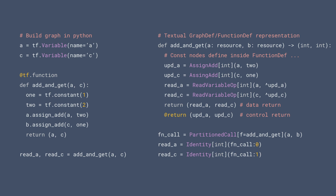The function def — the graph representation — looks something like this on the right. We have a graph def, which is basically a sequence of node defs, and we also have a function def. It's a way to group together a subgraph with input arguments and output arguments. The Python function will be transformed to a function def with two input parameters of resource type a and b, and a return type of pair of ints. The update_a does assign-add, we then do two reads, and control dependencies from the previous operation touching the same resource are added automatically by TF2.0 automatic control dependencies.